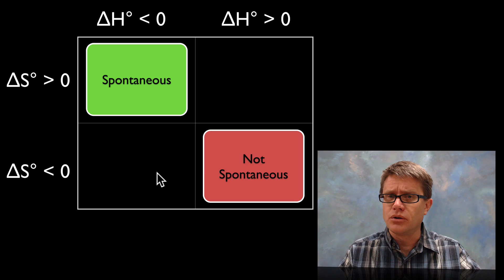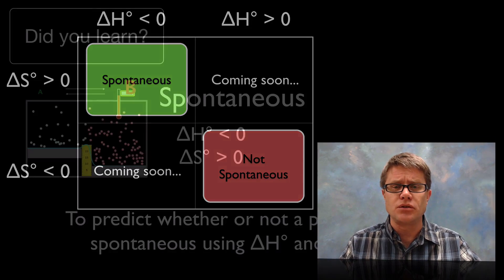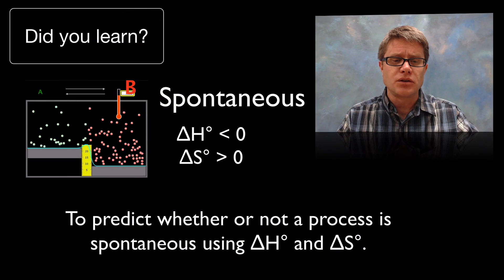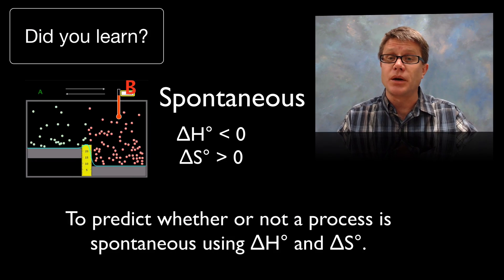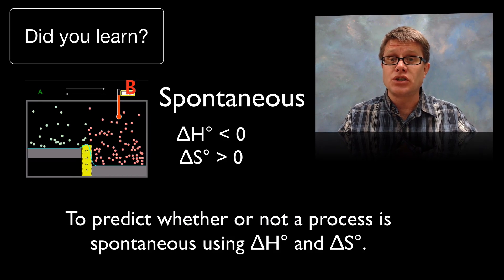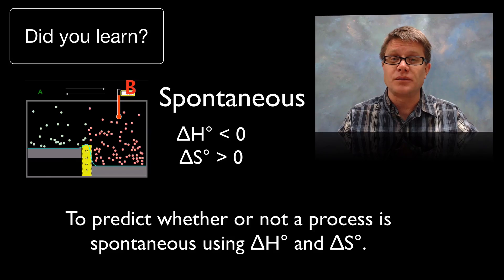Now what about the other two combinations? You're going to have to watch the next video on Gibbs free energy to figure out how we do that. Did you learn to predict whether a process is spontaneous using delta H and delta S? I hope so, and I hope that was helpful.